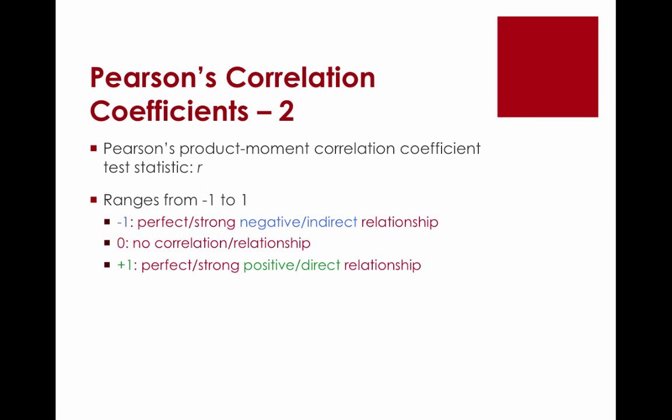The test statistic — just like the mean is denoted as x-bar and sample size as n — Pearson's product-moment correlation coefficient test statistic is denoted as lowercase r. It ranges from negative 1 to positive 1, where negative 1 indicates a perfect or strong negative, also known as an indirect or inverse relationship. Zero indicates there is no relationship, no correlation, no connection between variable x and variable y. And positive 1 indicates a perfect or strong positive, or direct relationship.